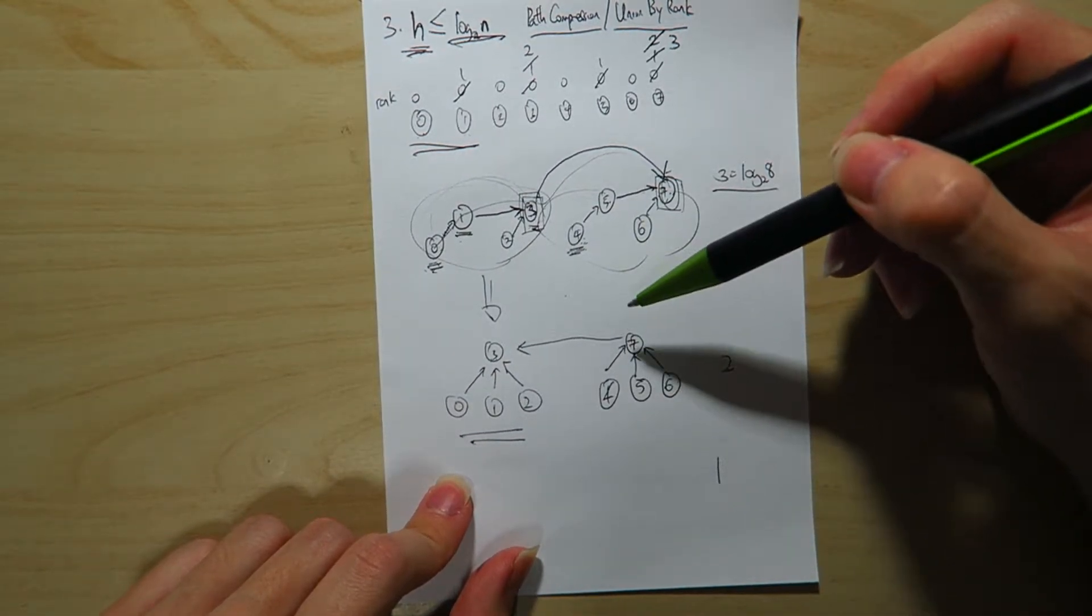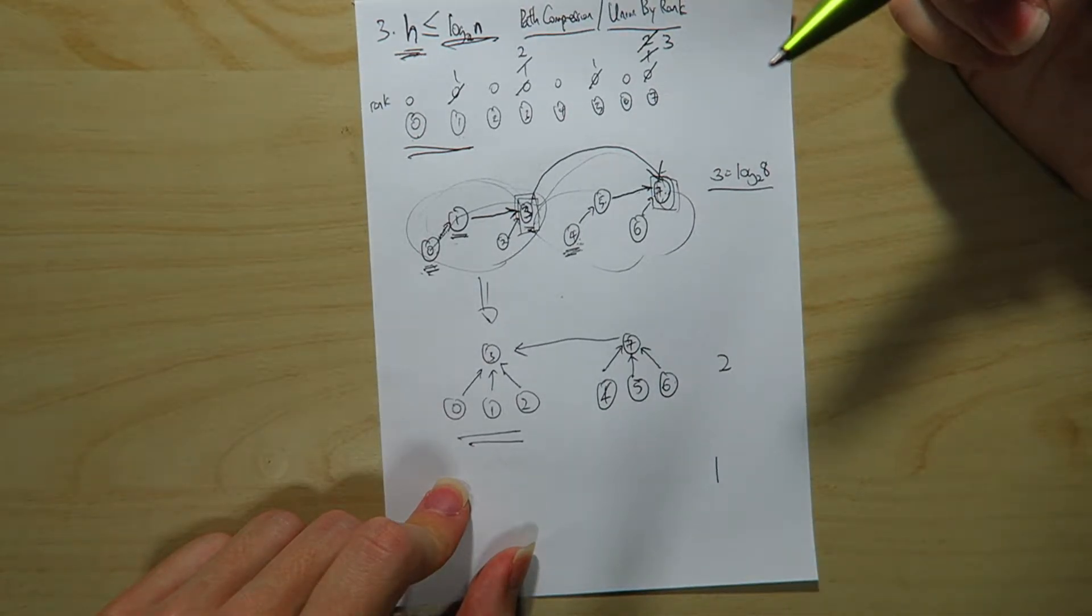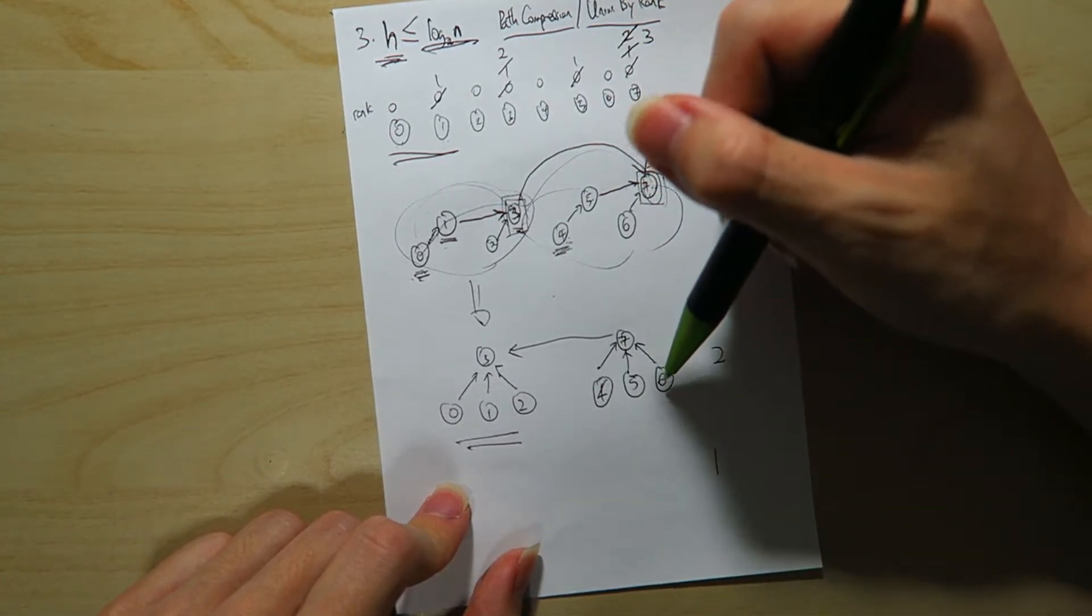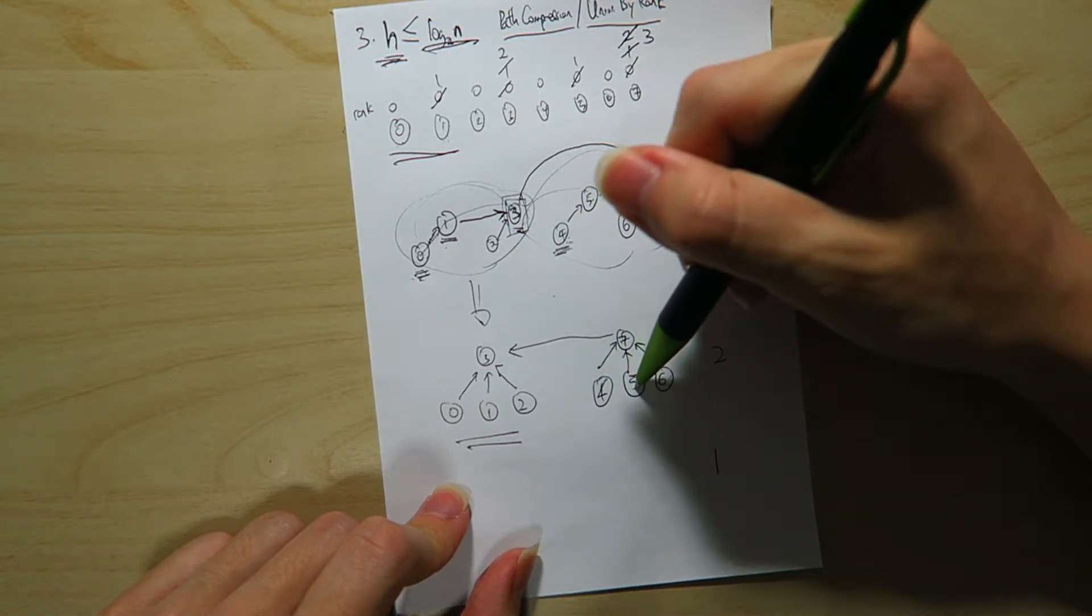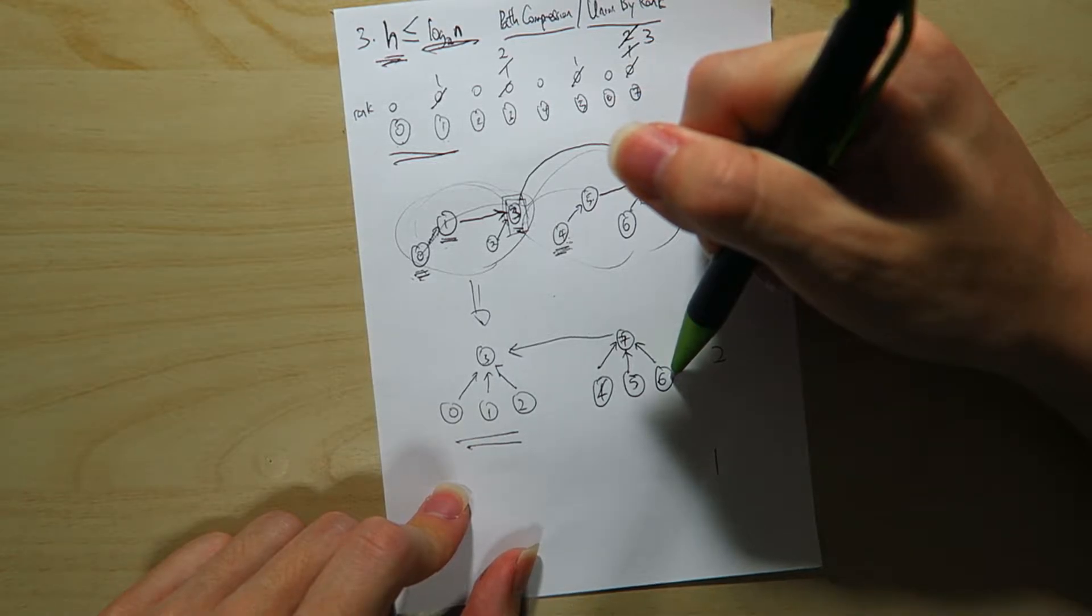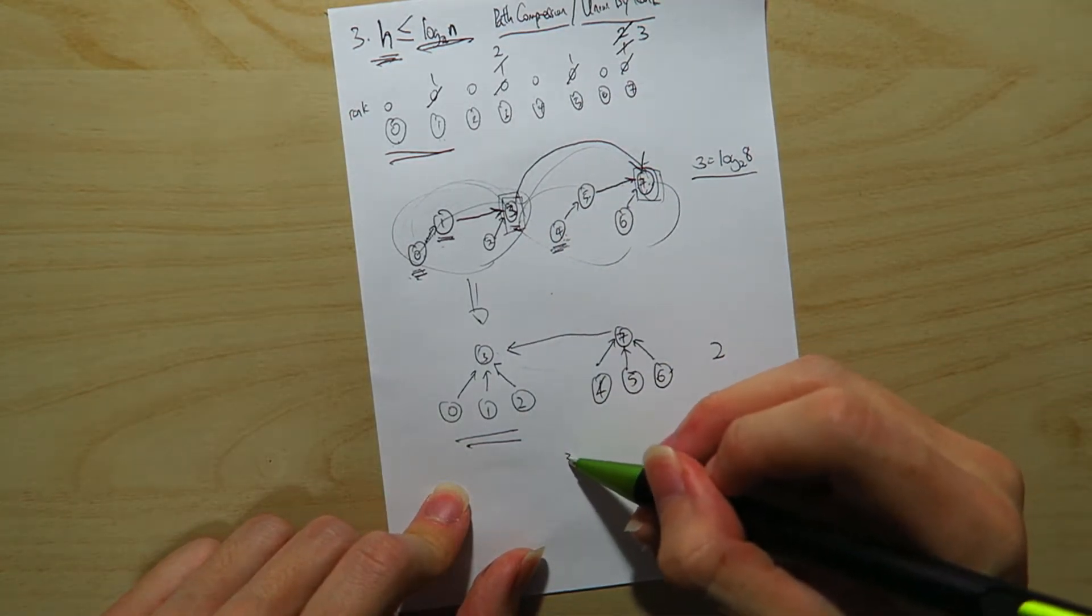Well, one way to do it is just to, because the question says that you can also do find set, right? So you can just do find set of, find set of 4, find set of 5, find set of 6, for instance, right? And then all 4, 5, and 6 is going to point to its tree. So if we do